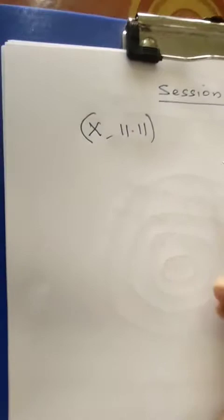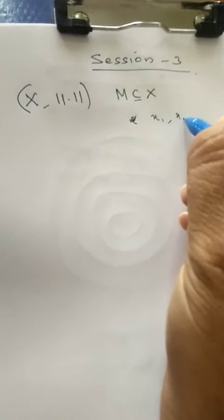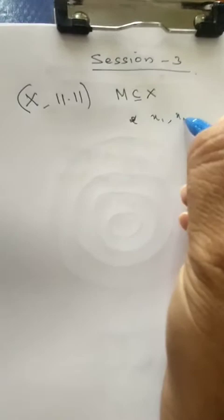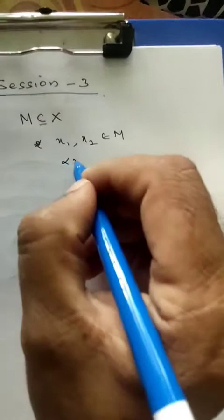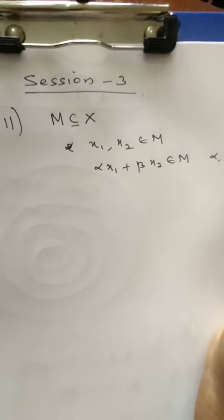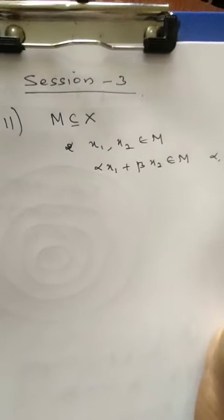First let us take the norm linear space X. Suppose M is any subset of X. From linear algebra classes, we say M is a subspace of X if for any two elements x1, x2 belonging to M, the linear combination alpha x1 plus beta x2 belongs to M, where alpha and beta are any scalars in the underlying field F. This is the condition for a subspace.